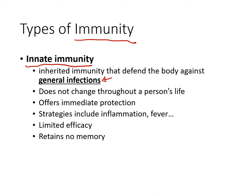Innate immunity does not change throughout a person's life. It offers immediate protection as soon as you come into this world and continues to protect you throughout your lifetime. Some strategies used by innate immunity to get rid of infections include inflammation. We've all experienced what inflammation looks like — if you cut your finger, it feels warm, red, swollen, and painful.